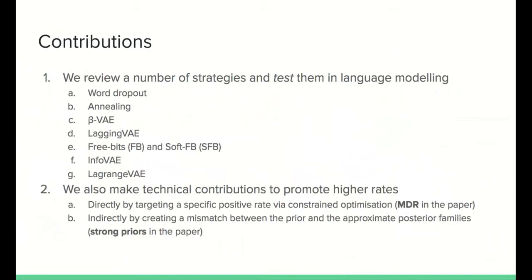Check out our paper for the following contributions. We review a number of strategies to combat posterior collapse and test them in a deep latent language model using English data — note that most of these techniques had not yet been tested with linguistic data. We make technical contributions aimed at finding models with higher rates. One way is to directly target a positive rate via constrained optimization, which we call MDR in the paper. Another way is to pick a prior family that by design can never be retrieved by the approximate posterior, which we call strong priors. Our paper also covers plenty of literature from our own community as well as from machine learning and computer vision.